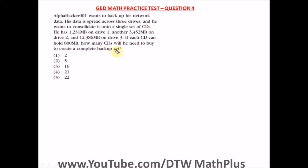So how many CDs will he need? He wants to consolidate it onto a single set of CDs. On drive 1 we have this amount, drive 2 we have this, drive 3 we have this amount of megabytes of data. If one CD holds 800 MB, how many CDs will he need?